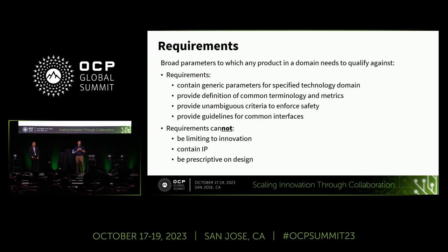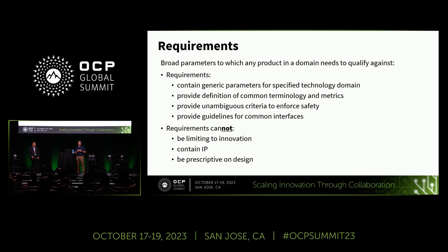Starting from the beginning: what is a requirements document? It provides broad parameters to which any product in a domain needs to qualify against. In terms of what OCP is looking for, a requirements document contains the generic parameters for a specific technology domain. Common terminology and metrics is a really important one — making sure that everybody is comparing their solutions apples to apples using the same terminology.